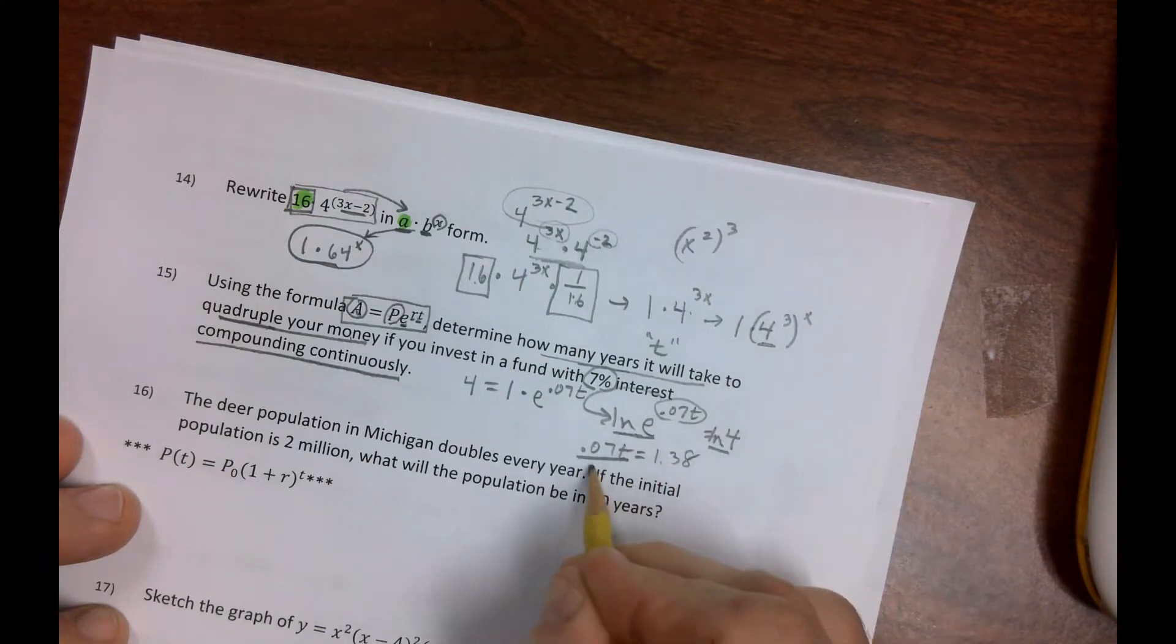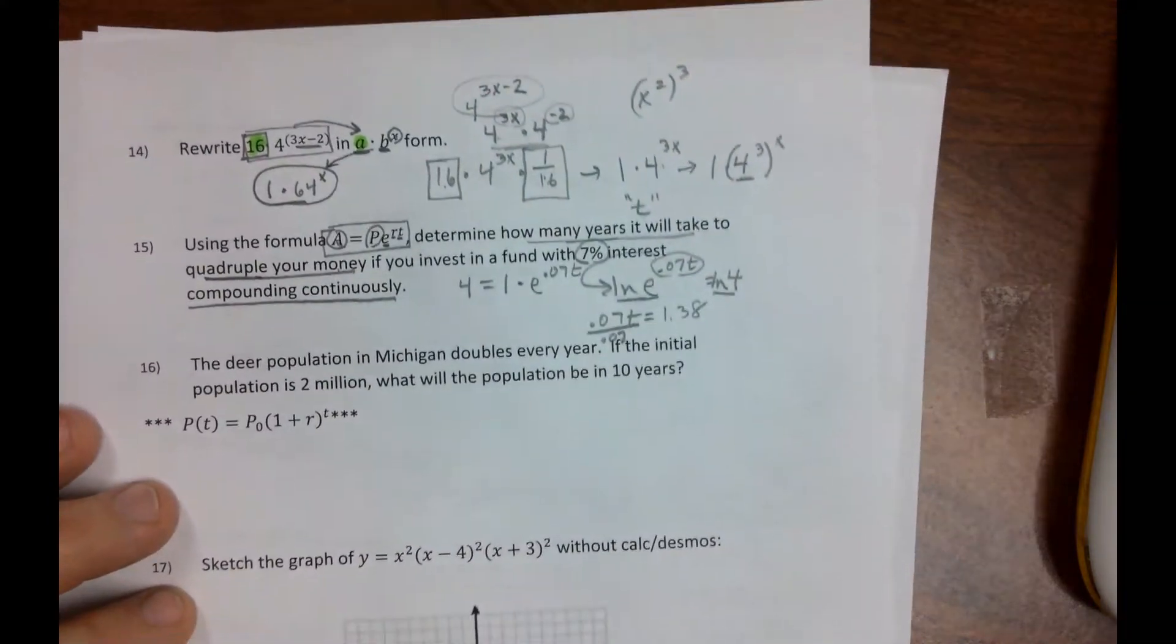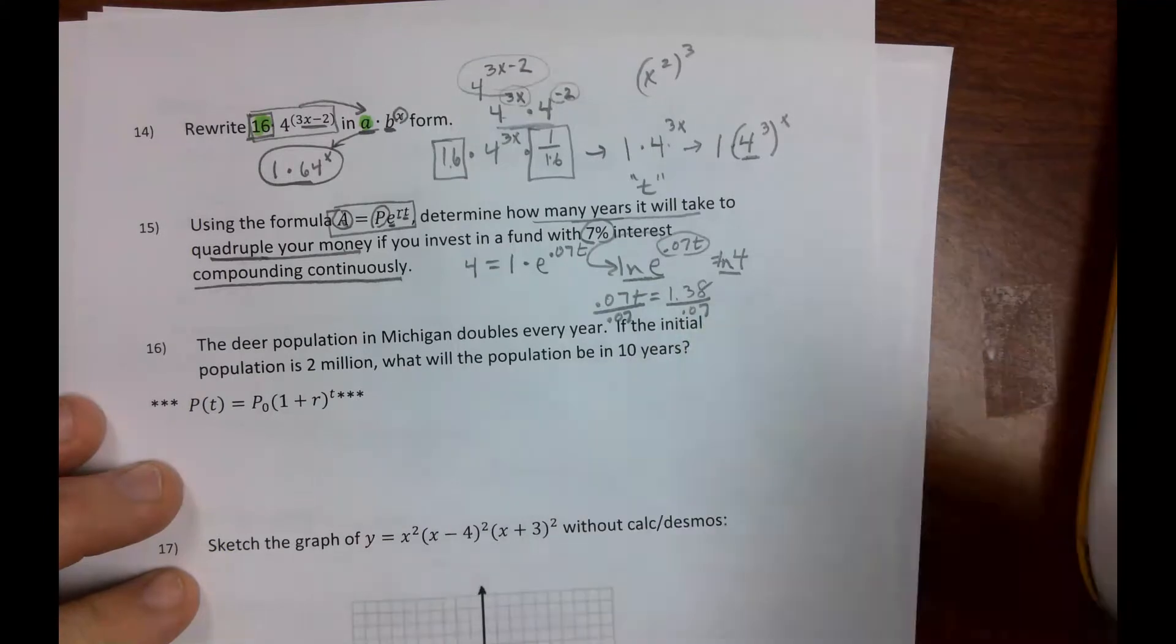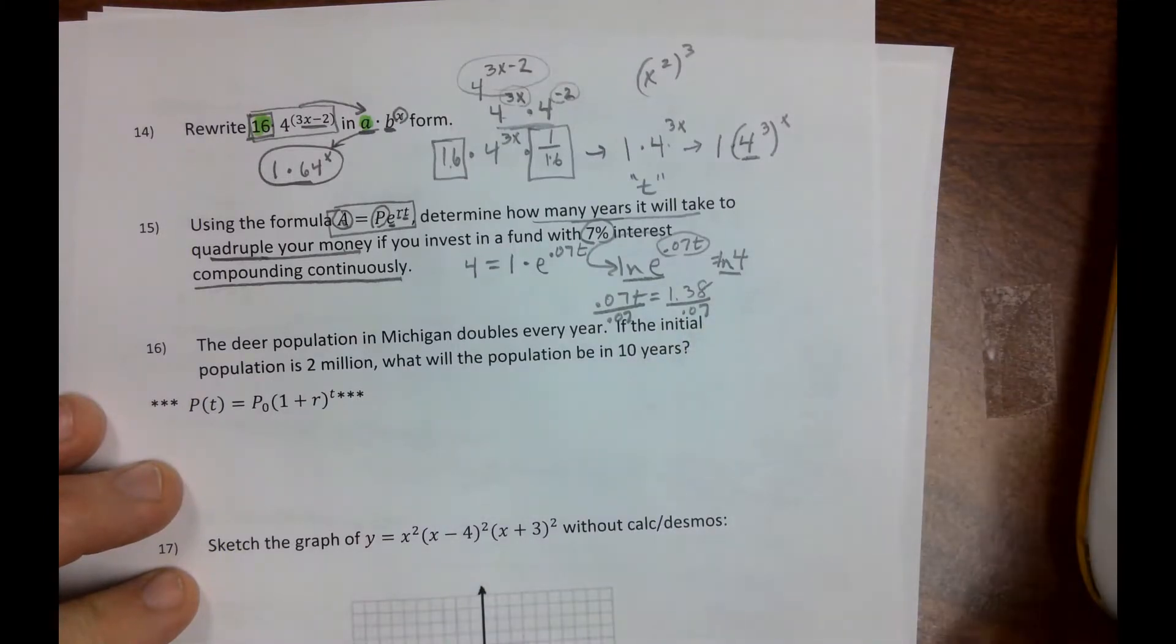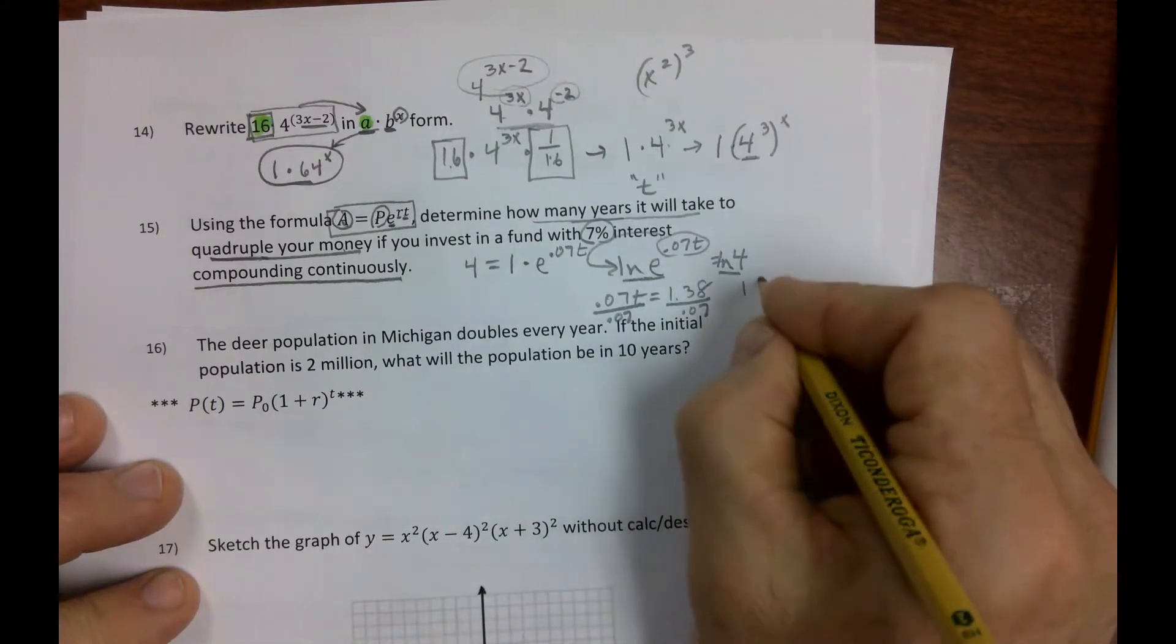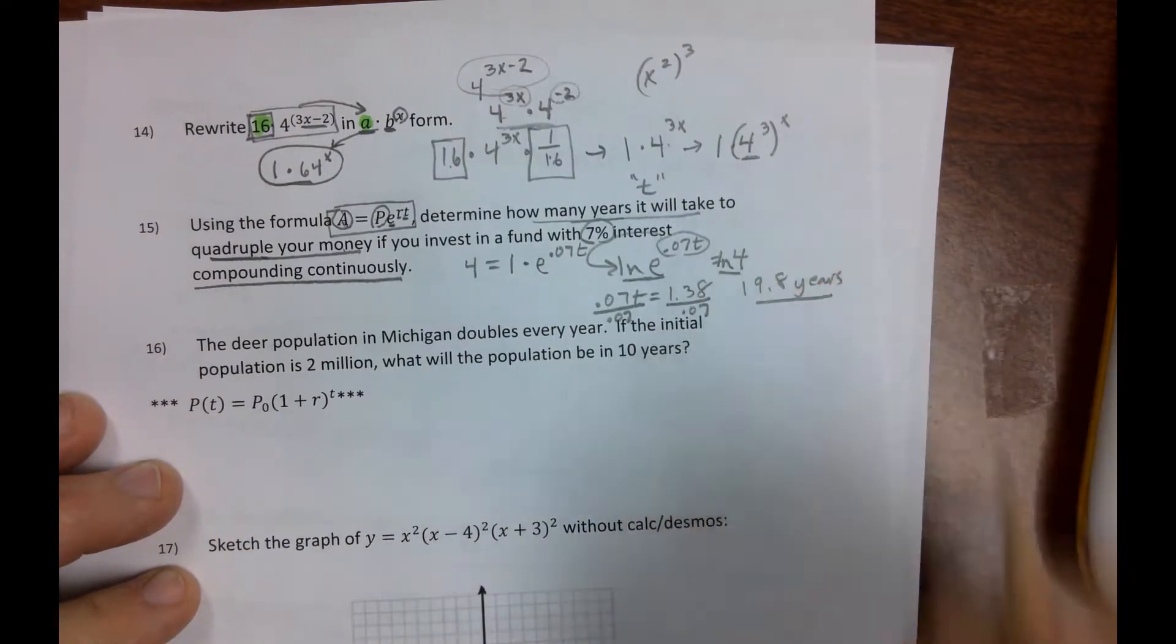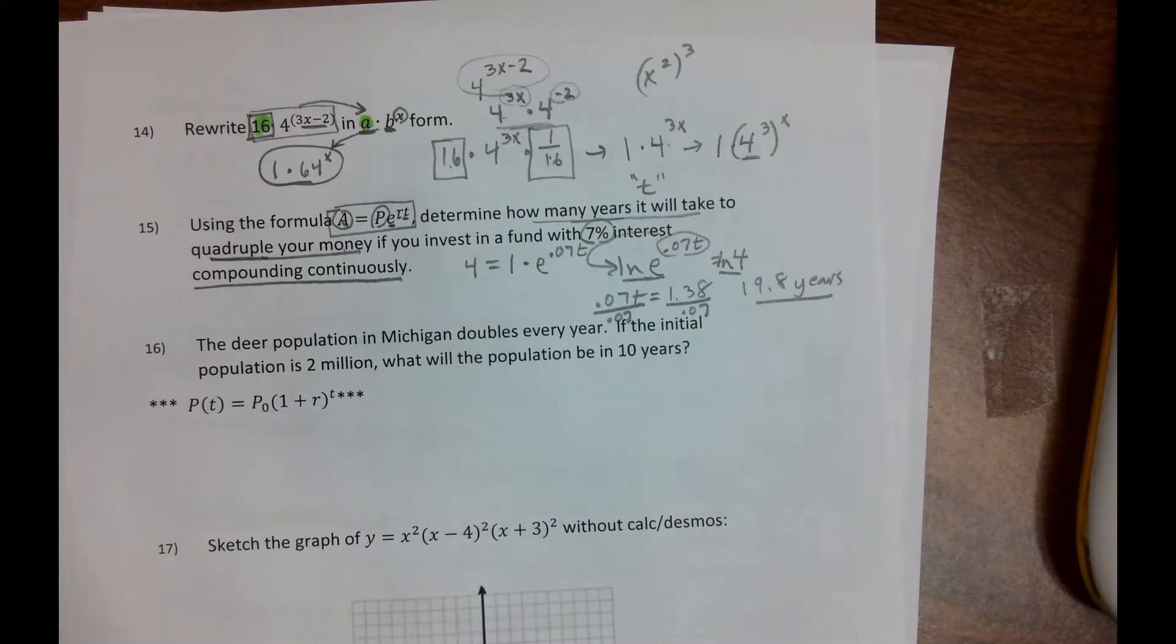So if I divide this by .07, sorry you guys, I'm making you look crooked there, .07, and I get 19.8. 19.8 years, which after 19.8 years, you'd be glad you did it.